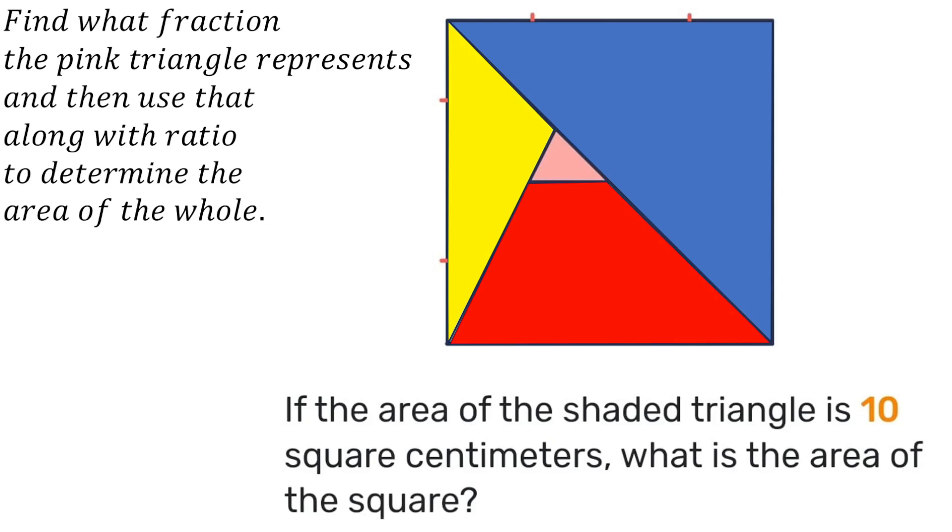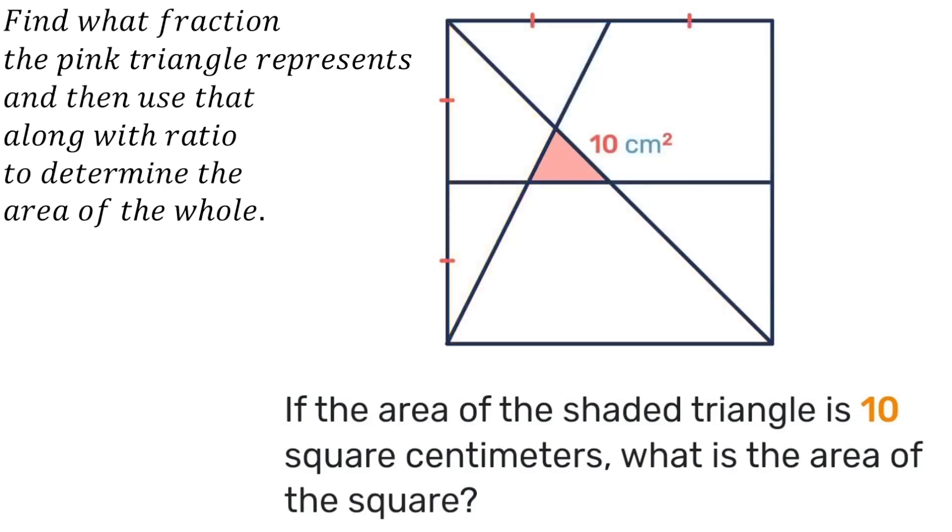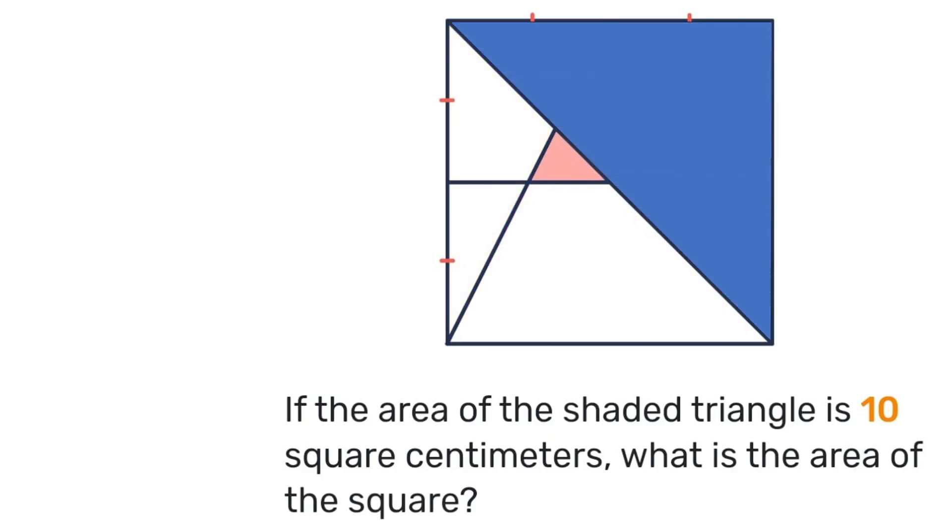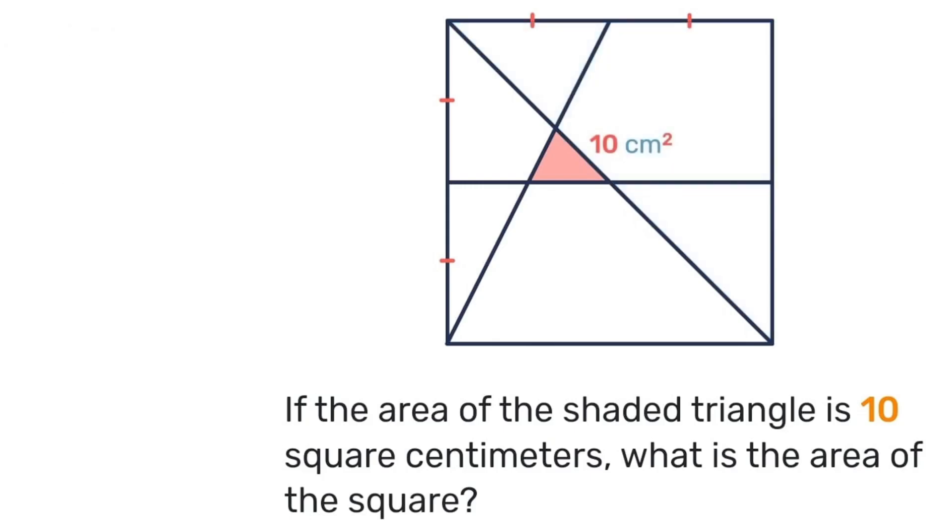Let's begin with the blue triangle. So the area of a triangle is half base times height where both sides of this triangle happen to be the entire unit square. So a half times one times one just gives us that the area of that blue triangle is exactly half the area of the entire square. Let's hold on to that one half for later.